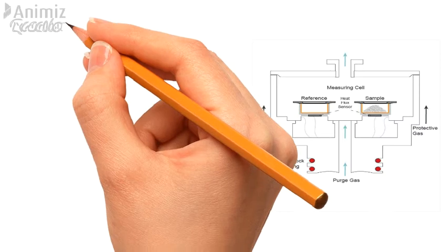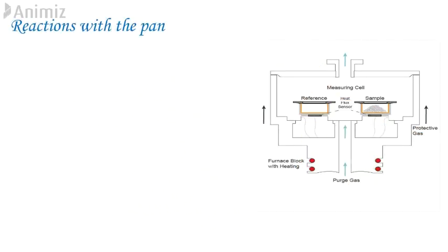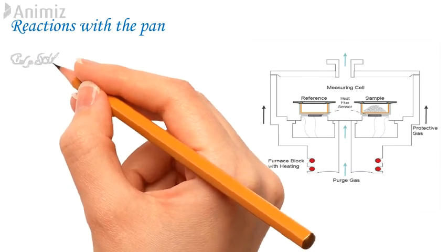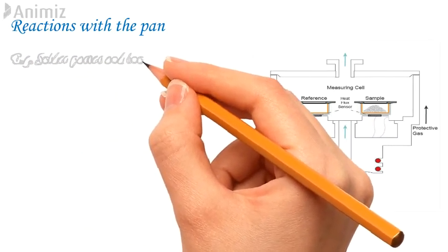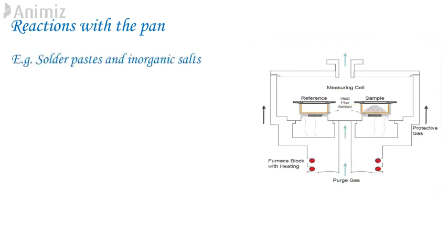4. Reaction with pan. Samples that react with pan can cause serious damage to analyzer since they may also react with furnace beneath. Solder paste and inorganic salts are typical examples of samples where care must be taken. If in doubt check it out separately from the analyzer and then choose a pan type which is inert. For example, sometimes the effect of catalysis is of interest and copper pans may be used to provide a catalytic effect. Aluminum pans are normally made of very high purity metal to prevent unwanted catalytic effects.